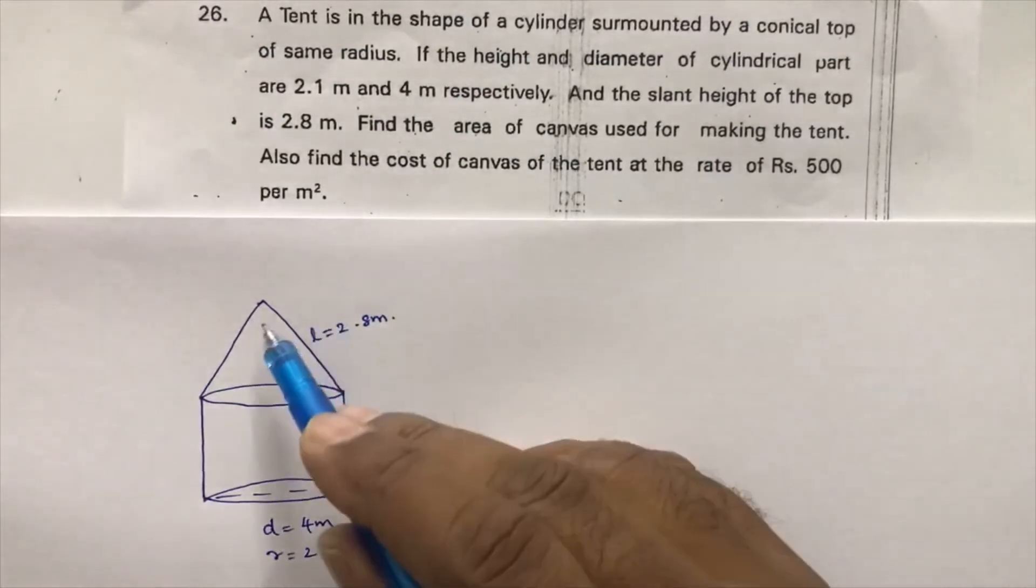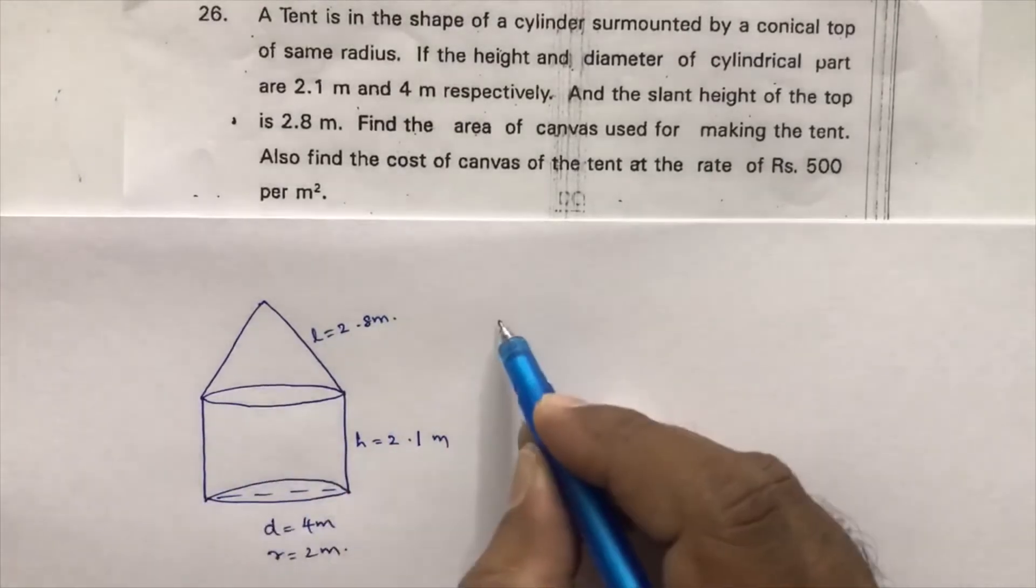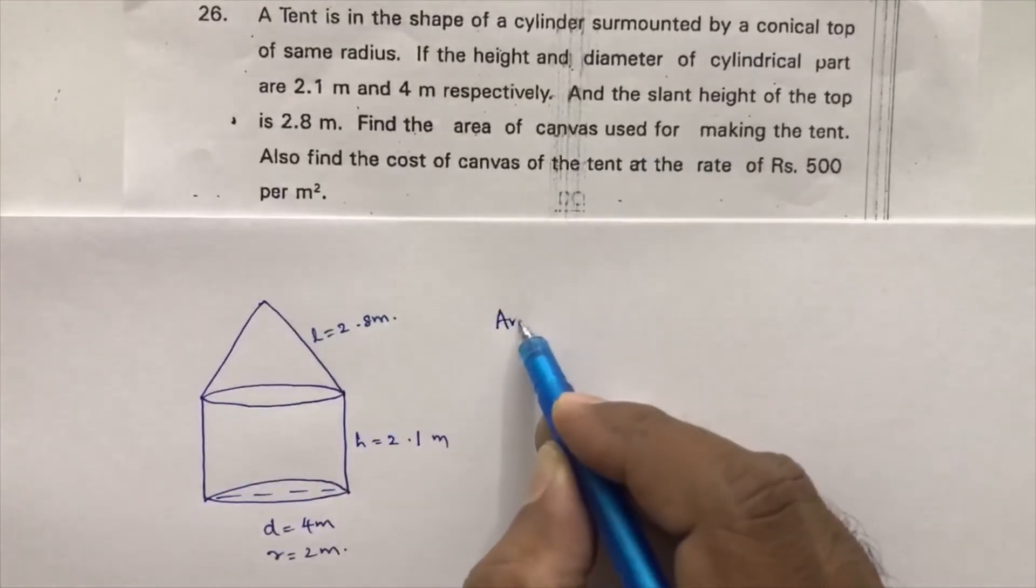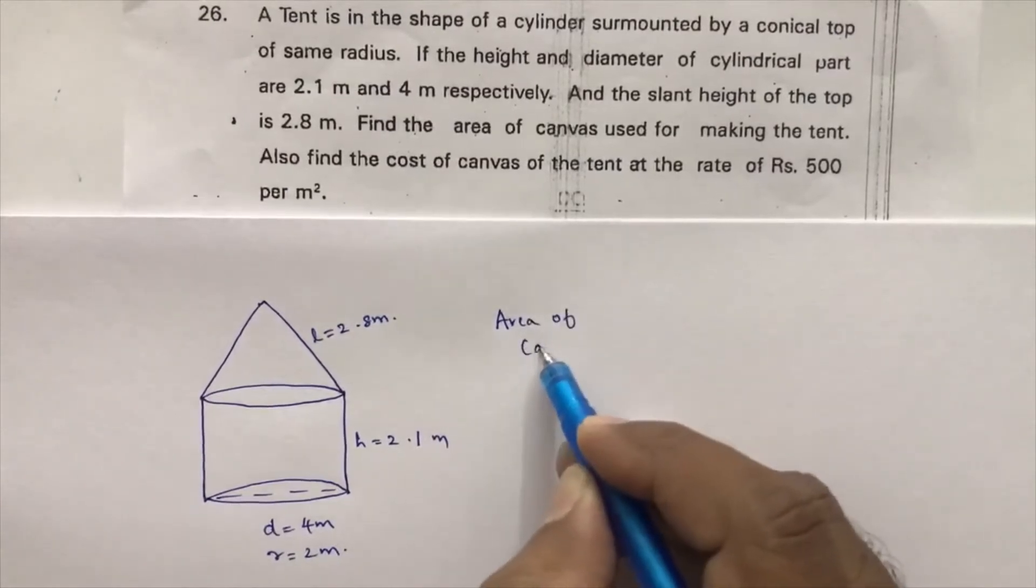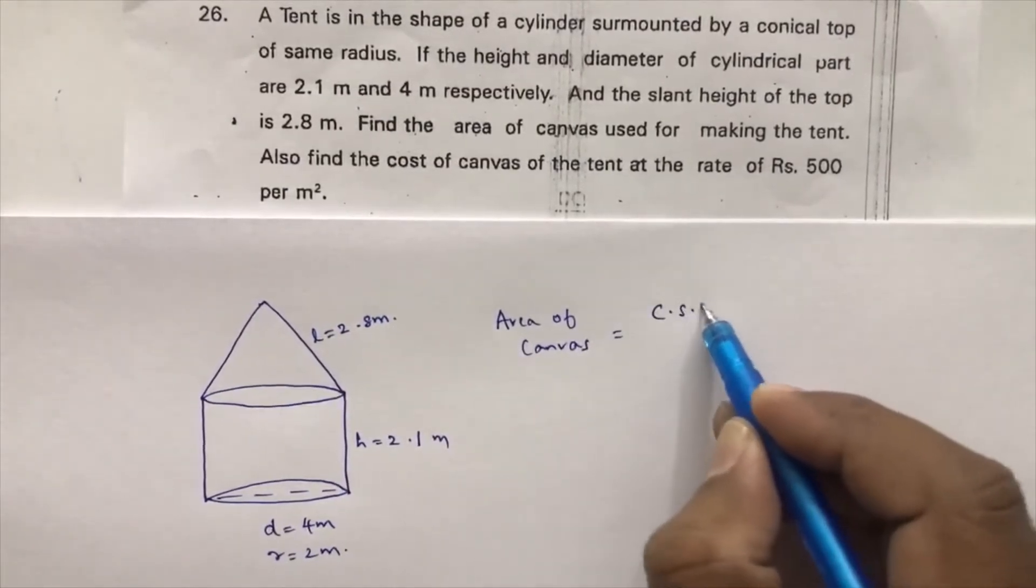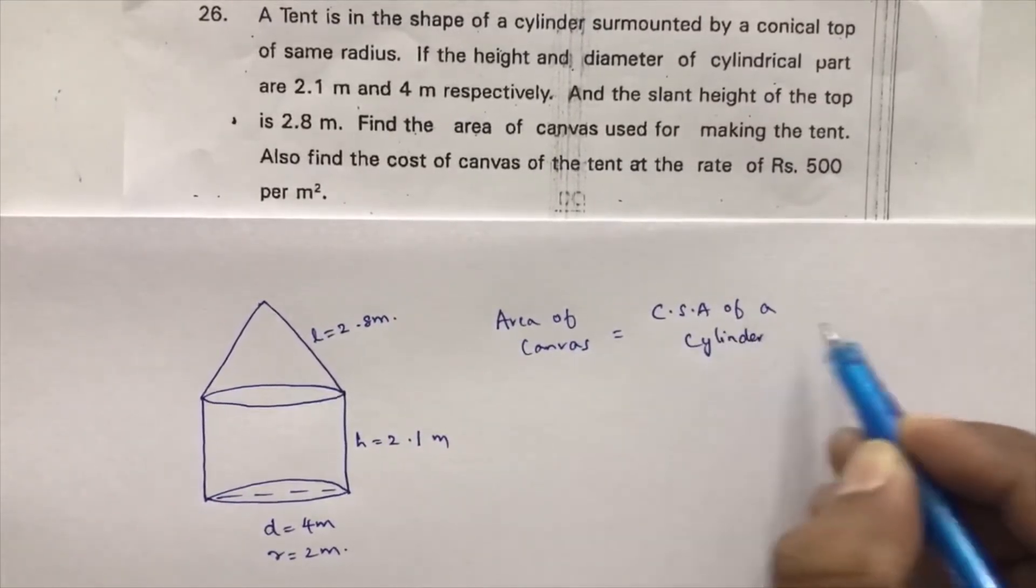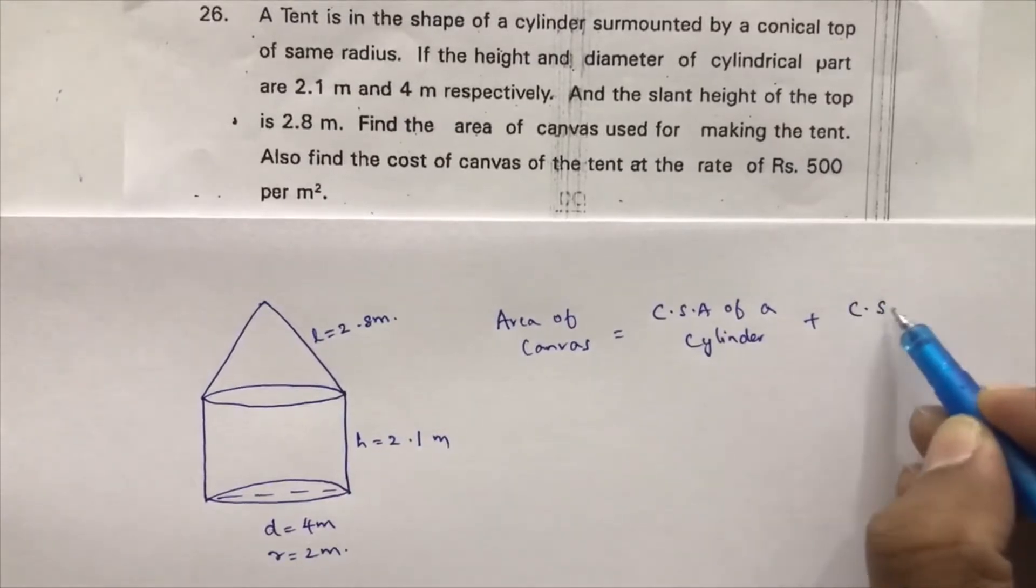Now to find the area of canvas, see here this base will not be counted and here also this part will not be. So just we need to find curved surface area. So area of canvas is curved surface area of a cylinder plus curved surface area of a cone.